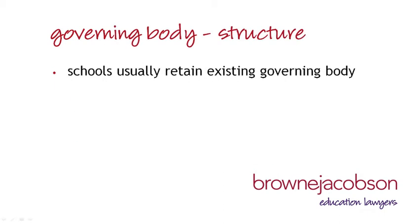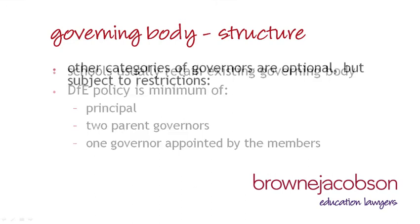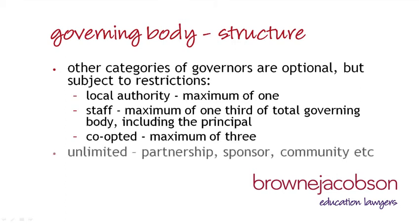Our experience is that schools generally wish to retain their current governing body makeup or something broadly similar. This is usually possible as the DfE requirements for the governing body structure are minimal. The DfE require that the principal is a governor, and the Academy's governing body must have a minimum of two parent governors. The members must have the power to appoint at least one member governor. Other categories of governor are optional, but there are some maximum thresholds. For example, there can only be a maximum of one governor appointed by the local authority, the number of Academy employees on the governing body must not exceed one-third of the total number of governors, and the DfE only permit up to three co-opted governors. An Academy can, however, have an unlimited number of partnership or community governors. We recommend that the governing body doesn't get too large, as this can affect the efficiency of decision-making and hinder the strategic role of Academy governors.